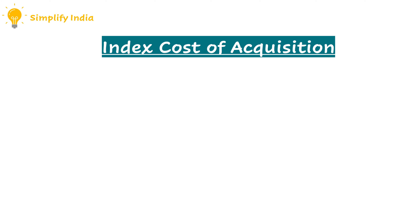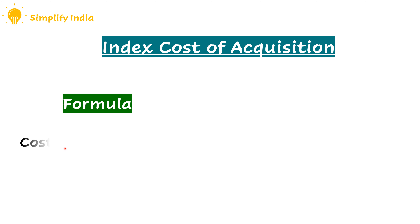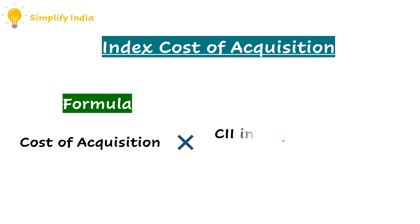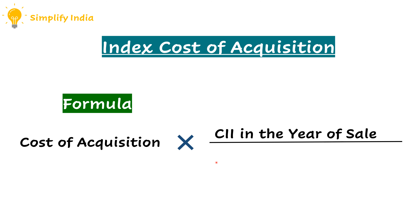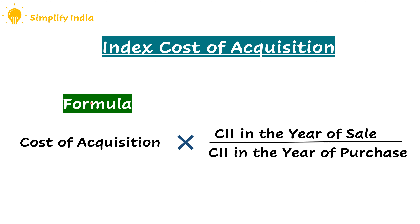Now, let us learn the formula for calculation of index cost of acquisition. That is: cost of acquisition multiplied by CII value in the year of sale, divided by CII value in the year of purchase.